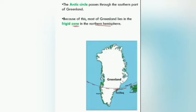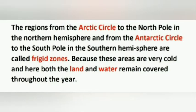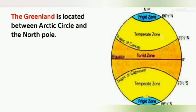The Arctic Circle passes through the southern part of Greenland, and most of Greenland therefore lies in the Freezer Zone in the northern hemisphere. Do you remember what the Freezer Zone is? You have already learned about it in previous chapters. The region between the Arctic Circle and North Pole, or between the Antarctic Circle and South Pole, is called the Freezer Zone.